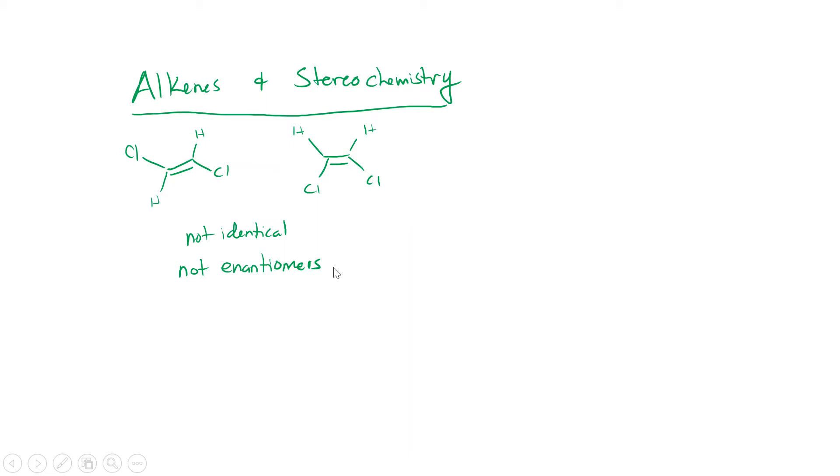If you reflect this one through a mirror, you get just the same compound back. So neither one of these compounds has an enantiomer, which makes sense because neither one of them has a stereocenter. There is no sp3 carbon that has four different groups attached to it in either one of these molecules. So if they're stereoisomers, but they are stereoisomers, if they're stereoisomers that are not enantiomers, that means that they have to be diastereomers.